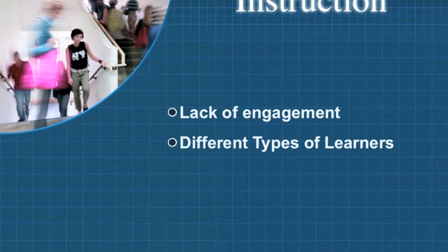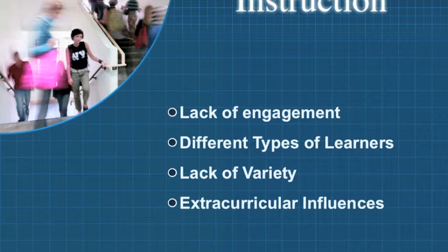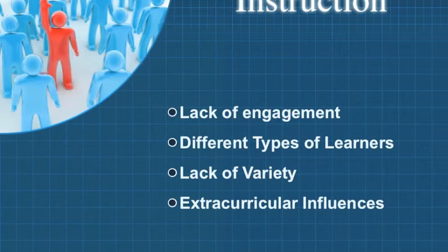Dealing with issues of instruction, the core issue is the lack of engagement. This can be caused by a number of factors. There are different types of learners who learn differently and therefore don't learn as effectively depending on how material is presented. The lack of variety in instruction is also a factor, as well as extracurricular influences such as bullying or other factors that may exist at home.